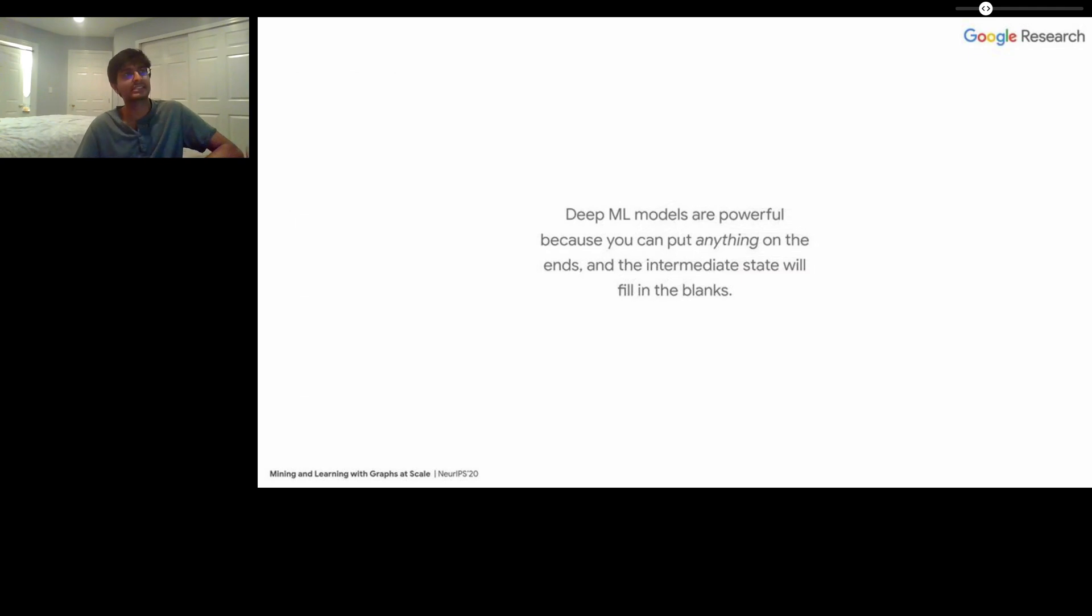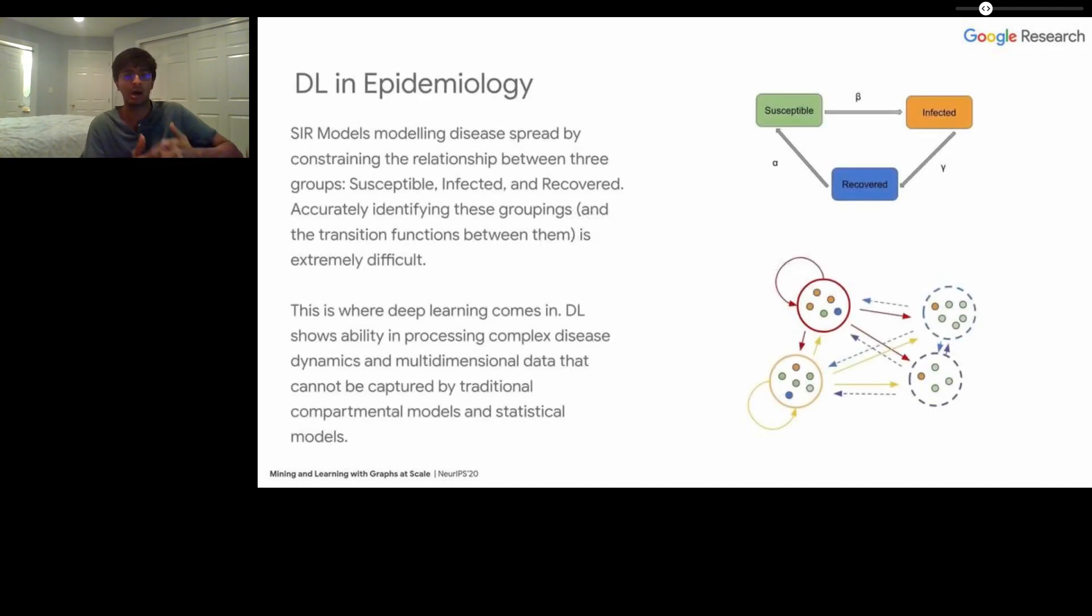This gets at an underlying reason for why we think deep ML models are so powerful. You can put anything on either side of a deep ML model and the intermediate state will fill in the blanks. I think this is really important when you start thinking about really complex things like epidemiology.